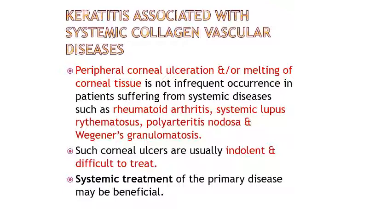There are some ulcers seen in the peripheral part of the cornea, where mainly the margin of the cornea is involved. These types of ulcers are called peripheral corneal ulcers, or peripheral ulcerative keratitis (PUK), or marginal keratolysis. There are many varieties and causes, and they are mainly called PUKs in short form.